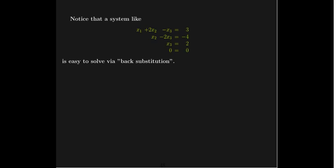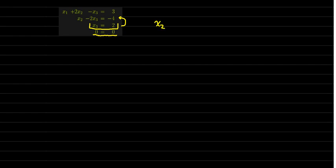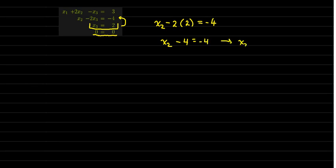This particular structure of a system of equations is really easy to solve, and we use a technique called back substitution. The 0 equals 0 is a true statement, but it doesn't give us any information about the solution. But I am given that x3 equals 2. So I can take that value and substitute it back into the equation above it: x2 minus 2·(2) equals negative 4, which gives me x2 minus 4 equals negative 4, so x2 equals 0.